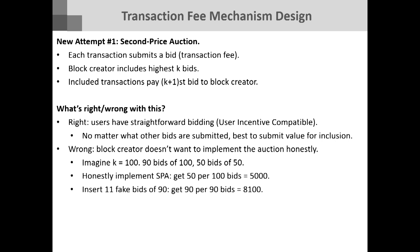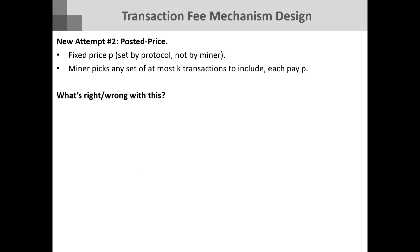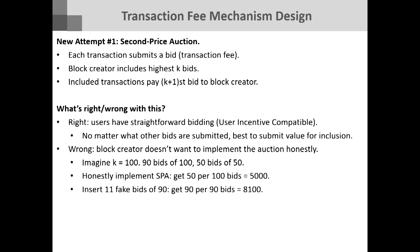What's wrong with the second-price auction is that it fails the first criterion: the block creator is not incentivized to follow this protocol. What the block creator should do is look at the set of bids and insert fake bids to drive up the K+1st highest price that everyone has to pay. This highlights that the constraint that the miner must want to follow the protocol definitely binds — and that's not always a first-order constraint in classical auction design. That's a new thing we have to think about.